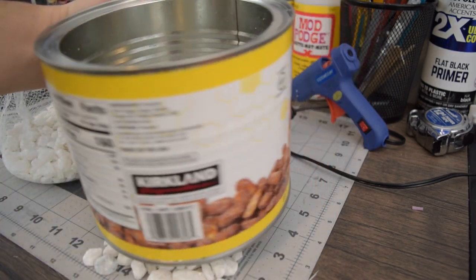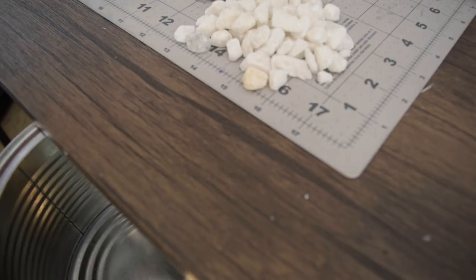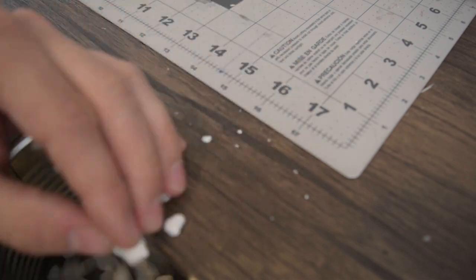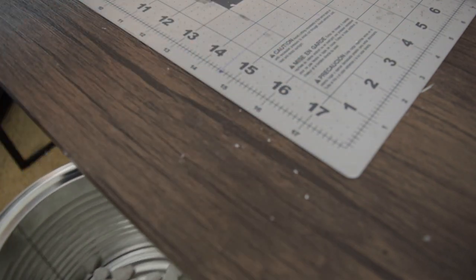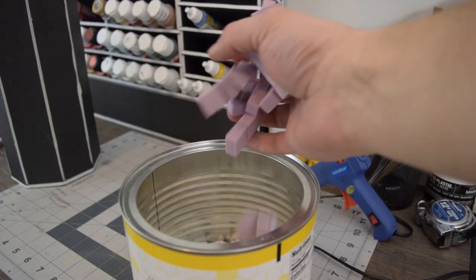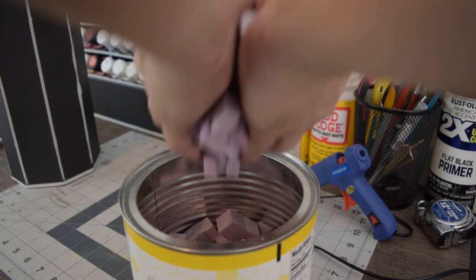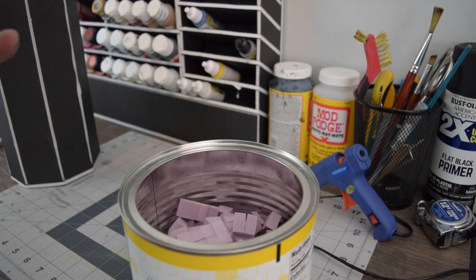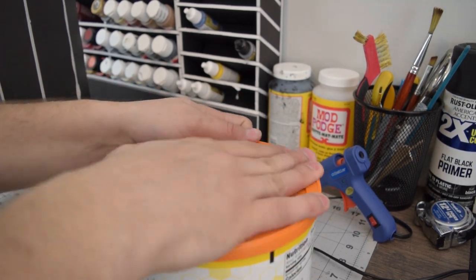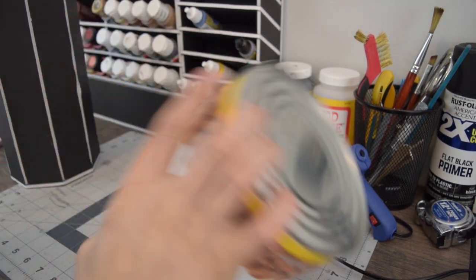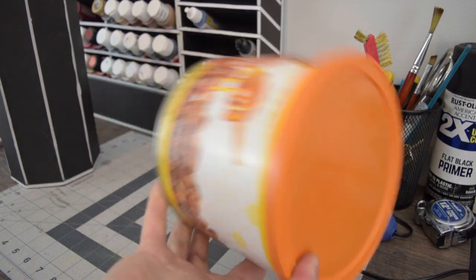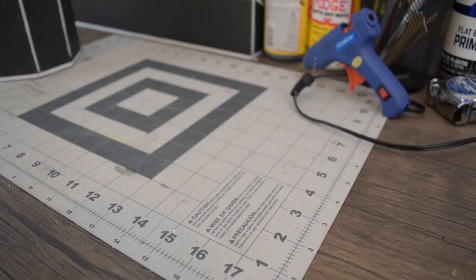I'm just going to take a coffee can, or a peanut can like I have, and fill it with more of those dollar store rocks. And add the bricks. And then shake it until you get the desired texture. And those look pretty good.